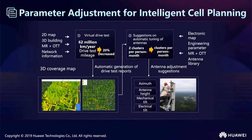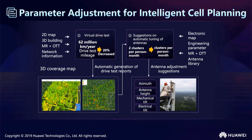Huawei CloudEI can also be used for parameter adjustment in intelligent self-planning. It can do driver testing with 2D map network information, similar to route planning in intelligent logistics. It can also do automatic tuning of antennas, such as azimuth antenna heading, mechanical tilt, and electrical tilt, using basic engineering parameters and antenna libraries. It performs well in automatic route test reports and provides antenna adjustment recommendations.